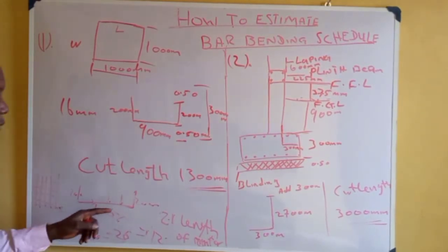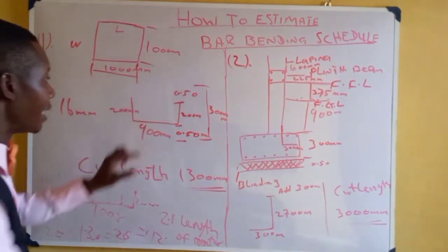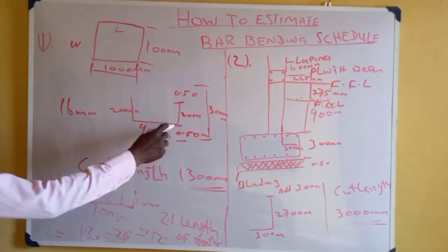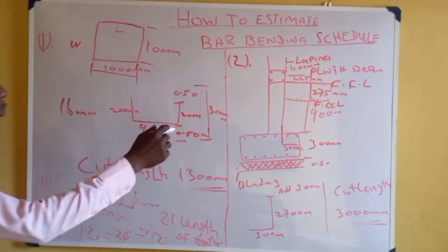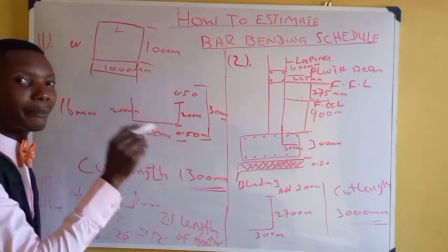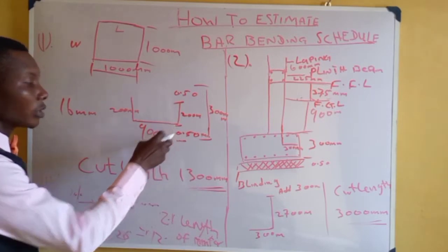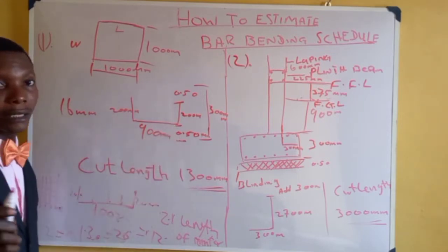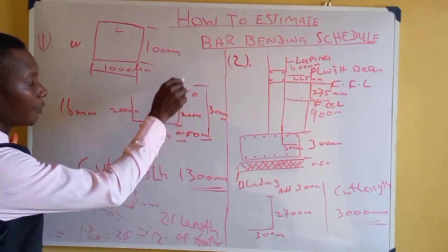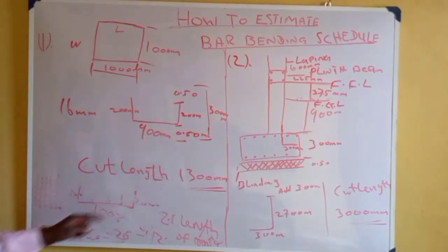The height of the base is 300mm. For the 100mm remainder, when you are going to bend, you use 50mm thickness for concrete cover on each side — 50mm concrete cover on one side and 50mm concrete cover on the other. So your cut-off length is confirmed as 1,300mm.